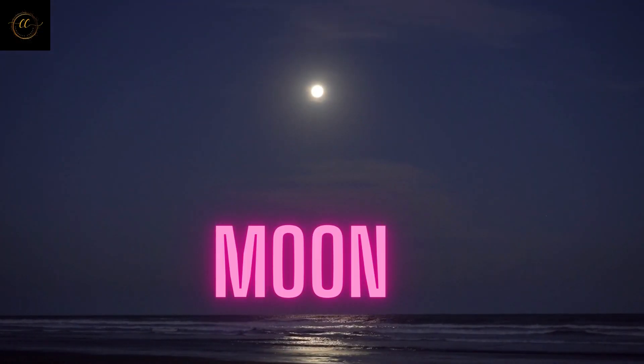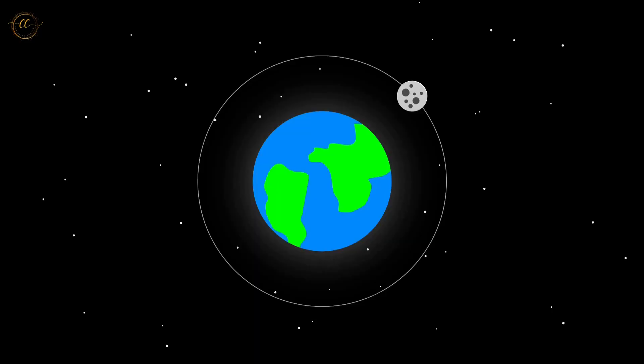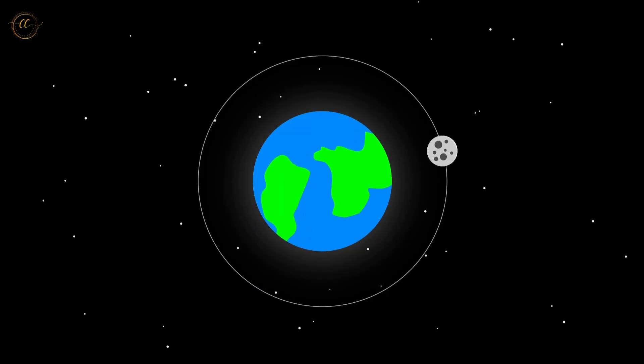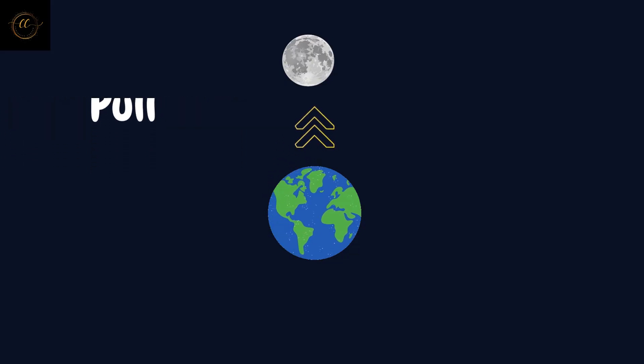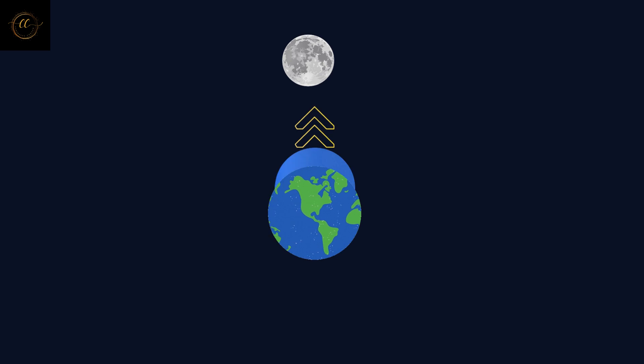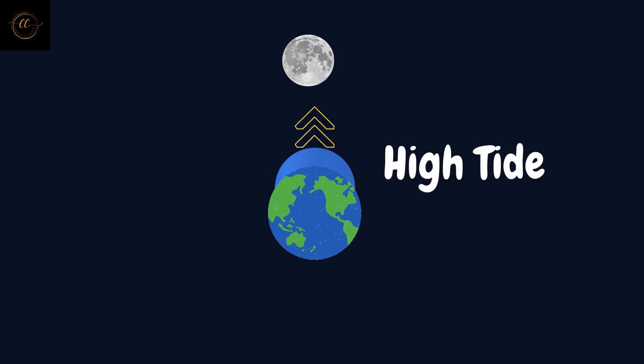But the primary factor influencing tides is the moon's gravitational pull. As the moon orbits the earth, it exerts a gravitational force on the ocean water. This gravitational pull causes the water on the side of the earth facing the moon to be pulled toward it, creating a high tide.